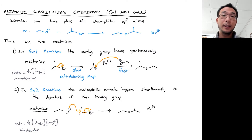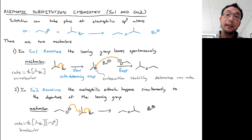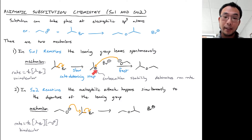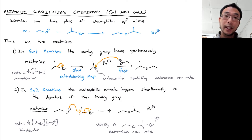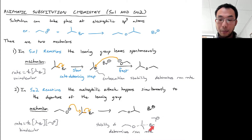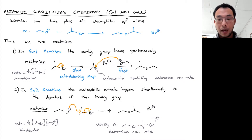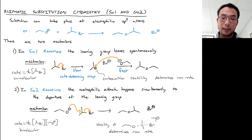When thinking about these two mechanisms, for SN1 we want to consider the stability of the carbocation intermediate, because the slow step depends on how easy it is to form that carbocation. For SN2, we think about the stability of the transition state — the hill we have to climb — specifically the point where we have a half-formed bond between the nucleophile and the electrophilic carbon, and a half-broken bond between the carbon and the leaving group.